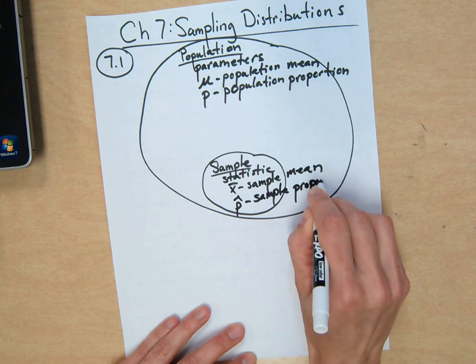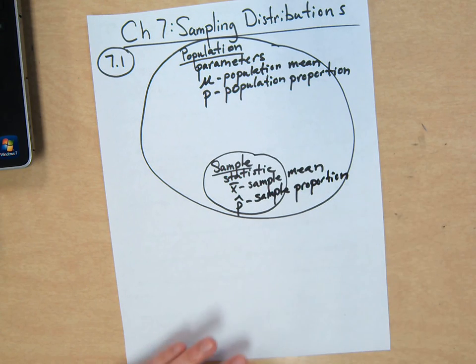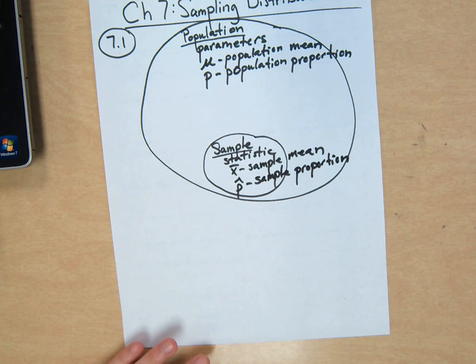And in our extra examples, we'll practice doing each of those. So we have means and proportions, because that's usually what we're interested in.